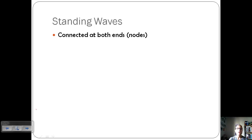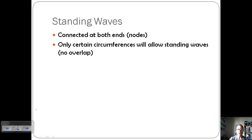Let's talk about what a standing wave is. A standing wave is connected at both ends. If you think about a rope and two people are holding it, those are the nodes. Only certain circumferences will allow standing waves. We don't want any overlap. This plays into our quantization that we talked about earlier, where if you think about stair steps, you have to be on one step or the other. You can't be in between. We had these very specific orbitals in the Bohr model. Now we're talking about these standing waves, but they're still very specific. That's why we have quantization.